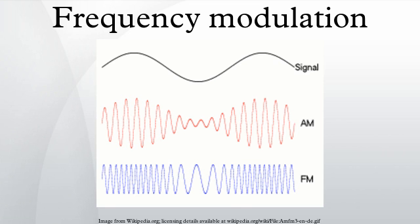Frequency modulation is used in radio, telemetry, radar, seismic prospecting, and monitoring newborns for seizures via EEG. FM is widely used for broadcasting music and speech, two-way radio systems, magnetic tape recording systems, and some video transmission systems.